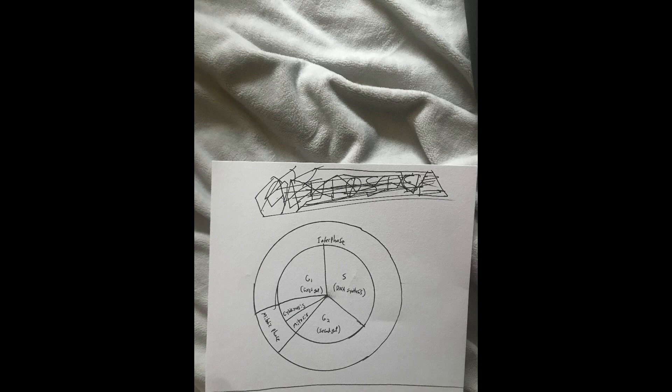Well, before mitosis even occurs, there is a period of growth within the cell called interphase. Interphase makes up at least 90% of the total time required for the cell cycle and can be split up into three subunits.